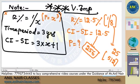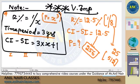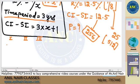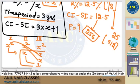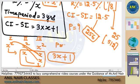If R percentage is 1/x and the time period is 3 years, the principal is x cubed. Proof: SI each year is x squared. 1/x of x squared is x for each year. The interest on interest terms sum to 3x + 1. I hope the proof is also clear.